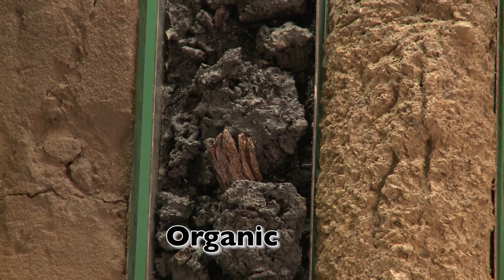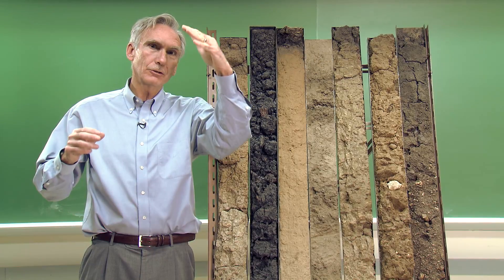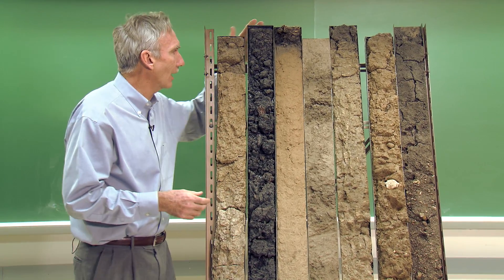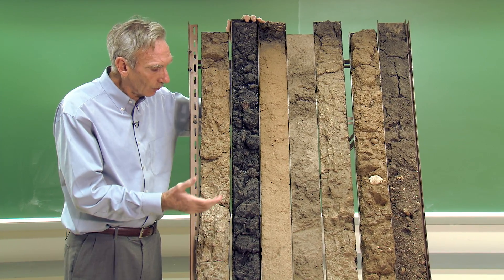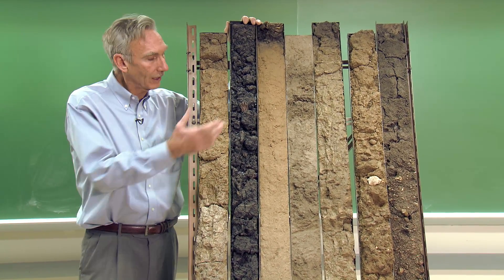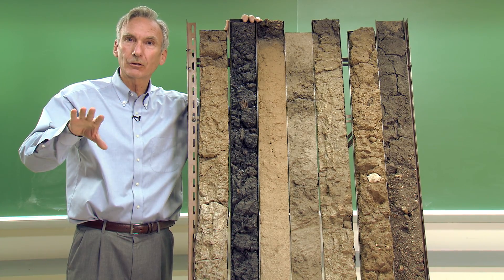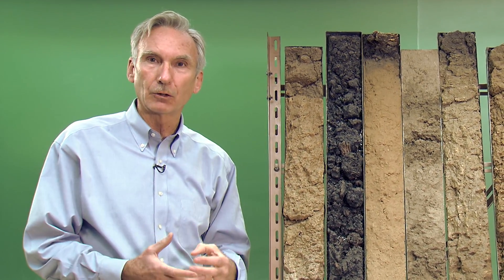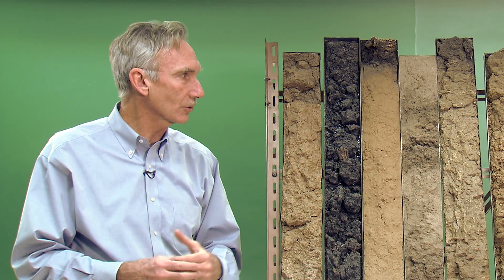One percent of our soils worldwide are considered to be organic soils. If you're up in northern Indiana, maybe in Michigan or in Wisconsin, you'll find pockets of organic soils. This particular soil is an organic soil because it has greater than 30% organic matter. The highest organic matter content you usually find in a mineral soil is somewhere between 5% and 7% organic matter.